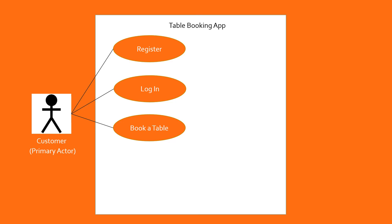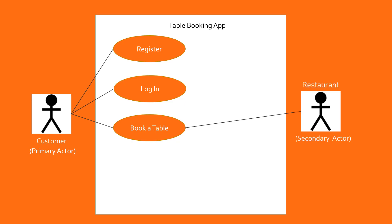Now let's enhance the diagram to include additional requirements. Once the table is booked, the restaurant needs to be notified and the table blocked for the customer. This is represented by adding the restaurant as a secondary actor, with an association between the 'Book a Table' use case and the restaurant actor. There are also additional functionalities: checking table availability and throwing an error message when no table is available. Every time the 'Book a Table' use case is invoked, the 'Check Availability' use case is also invoked — hence it is an include use case — and the relationship is indicated with a dotted line with the word 'include' on it.